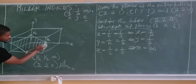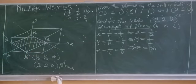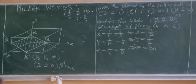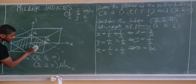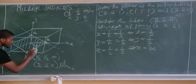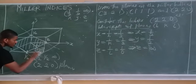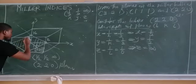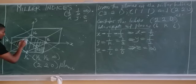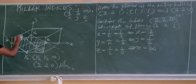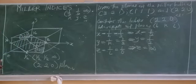This (220) plane can go in either direction but can never move in the direction of the z-plane — it remains parallel to z. For the direction, draw a line from the origin perpendicular to the surface at 90 degrees, and indicate it with square brackets: [220] direction. That's how you plot Miller indices and their directions.